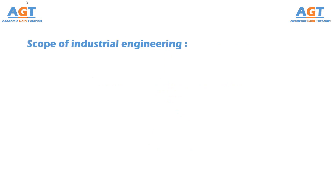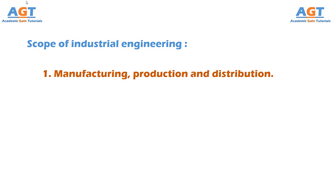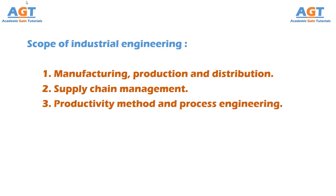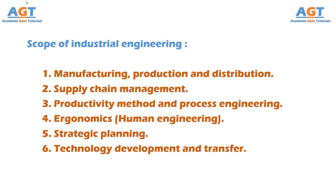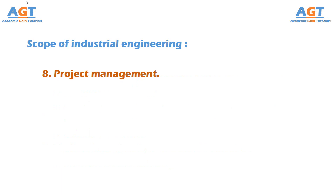An industrial engineer can spread his wings and find his future scopes in several fields, including: 1. Manufacturing, production, and distribution industries. 2. In the field of supply chain management. 3. Productivity, method, and process engineering. 4. In the field of ergonomics or human engineering. 5. Strategic planning. 6. Technology development and transfer. 7. Concurrent engineering. 8. Project management.